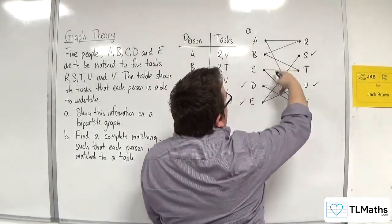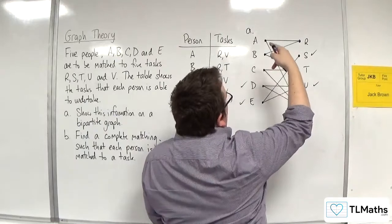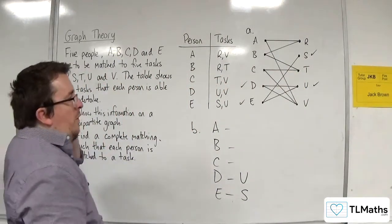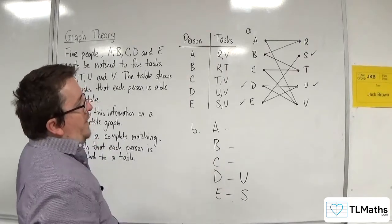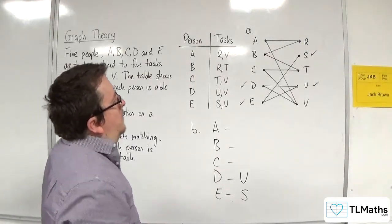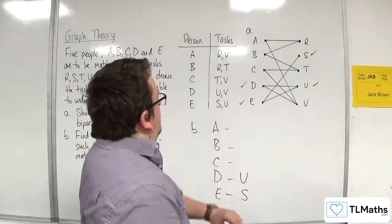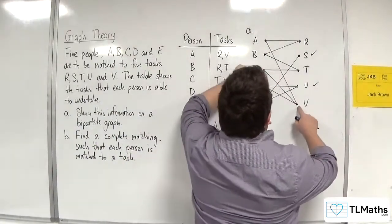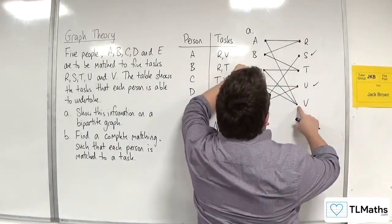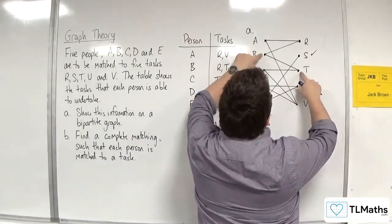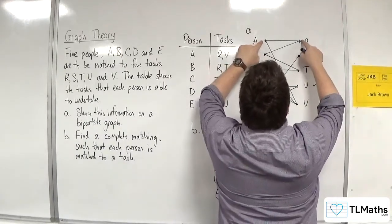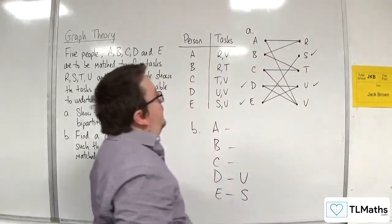So either C does V or A does V. We've got a couple of options there. Let's work it through. If C does V, that means T would have to be done by B, which means R would have to be done by A. And that works out.